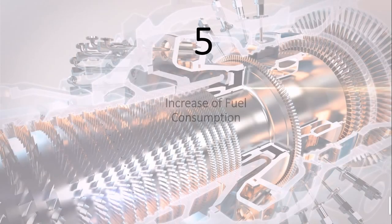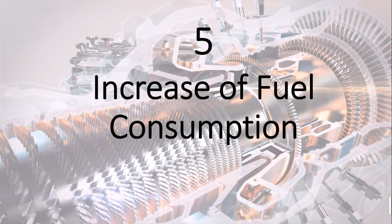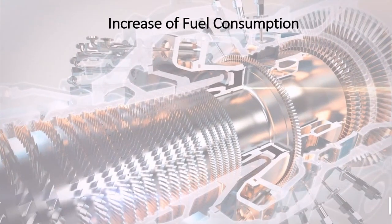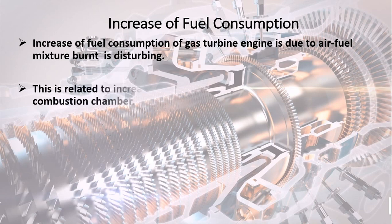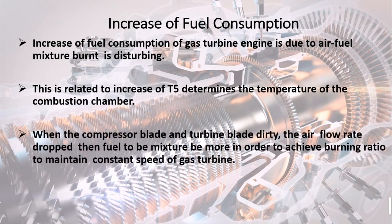Reason 5: Increase of fuel consumption. Increase of fuel consumption of a gas turbine engine is due to the air-fuel mixture burn being disturbed. When the compressor blade and turbine blade are dirty, the air flow rate drops, then the fuel-to-burn mixture must be more in order to achieve the burning ratio to maintain constant speed of the gas turbine.